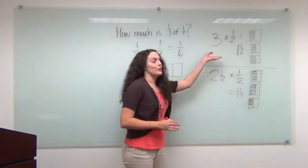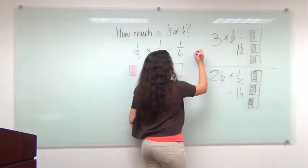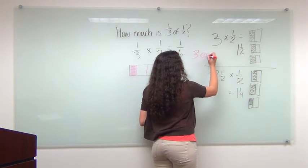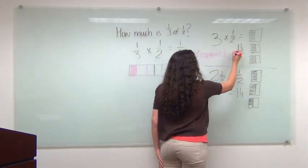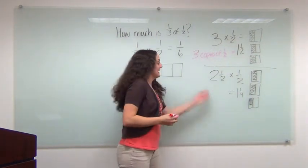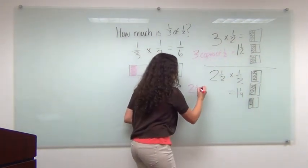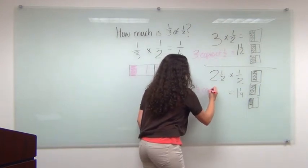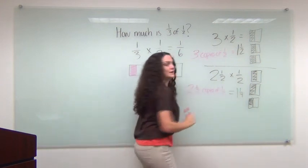In this example, we can think of it as three copies of a half, like this. So three copies of a half was one-and-a-half. And down here, it was two-and-a-half copies of a half, was one-and-one-fourth.